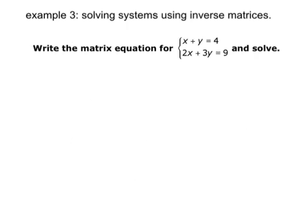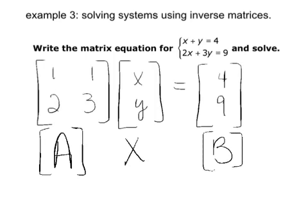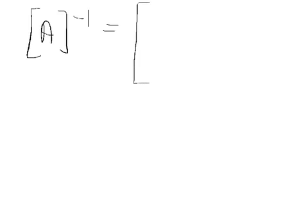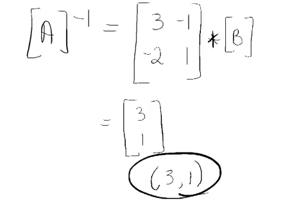Let's try another one. Go ahead and write the matrix equation: you have A, X, and B. Enter A and B into your calculators. Take the inverse of A and hit enter — it'll spit out the inverse matrix. Keep that in the window, multiply times B, and hit enter again. Your answer should be 3 and 1. So X equals 3, Y equals 1.